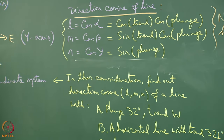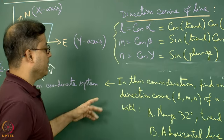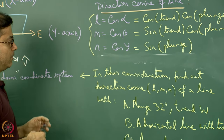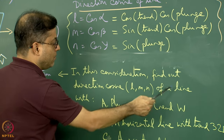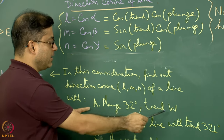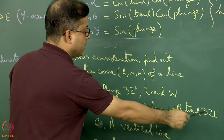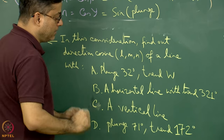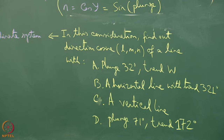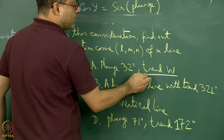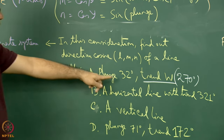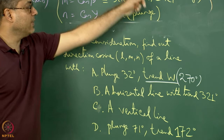With this understanding, we can set a problem: find the direction cosines l, m, n of a line for the following cases — (a) the line has a plunge of 32° and trend west; (b) the line is horizontal and trends 321°; (c) a vertical line; and (d) a line with plunge 71° and trend 172°. A line that trends west means basically 270°, so in the formula plunge 32° and trend 270° has to be plugged in.